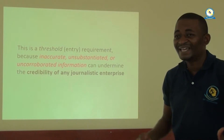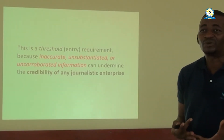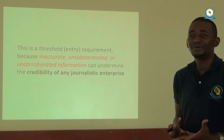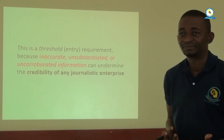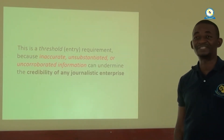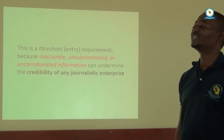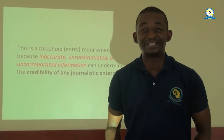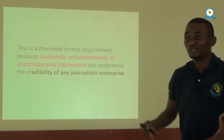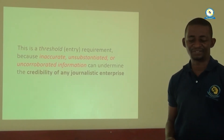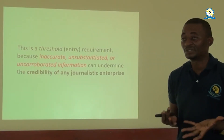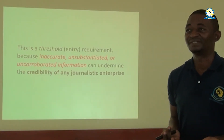When we talk of truth, that is the entry point. Be accurate; don't be inaccurate. Lack of truth means the story is unsubstantiated and contains uncorroborated information. As a result, this undermines the credibility of the media and also the credibility of the moral agent — that is the journalist himself. We are putting the entire media industry into jeopardy if we are not telling the truth or if our stories lack necessary facts.